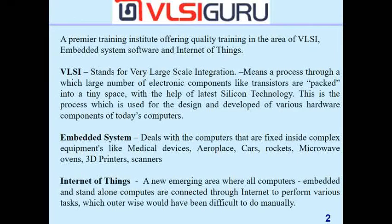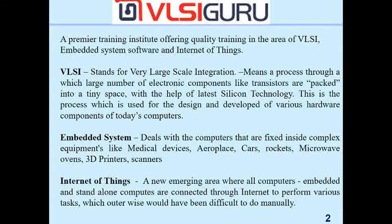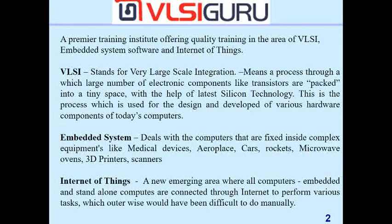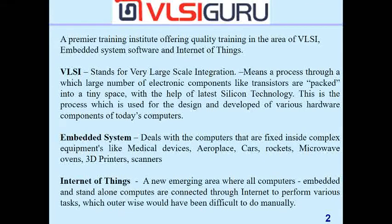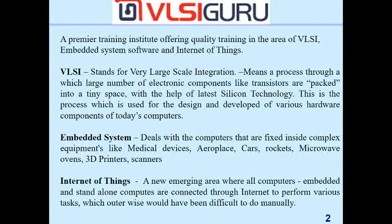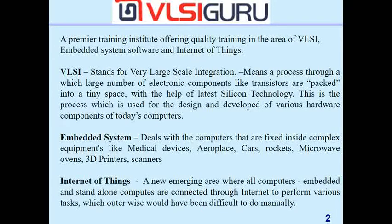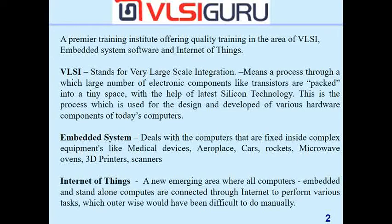Embedded systems deal with computers that are fixed inside complex equipment like medical devices, aeroplanes, cars, rockets, microwave ovens, 3D printers, scanners, etc. There will be a computer inside almost any equipment — that is called an embedded system. When the computer itself becomes one of the parts of a large complex system, we call that computer an embedded computer or an embedded system.